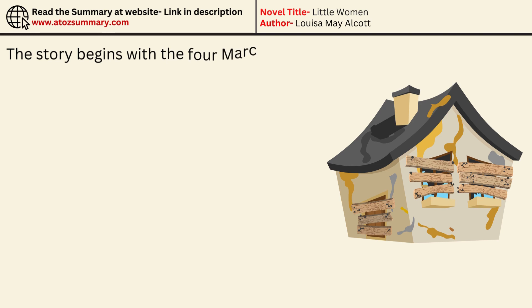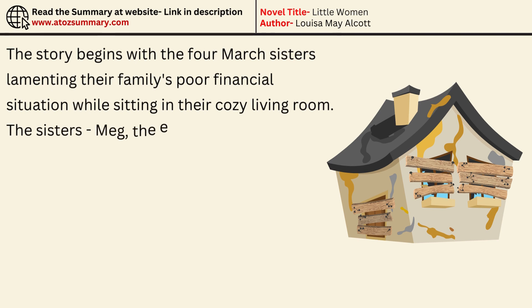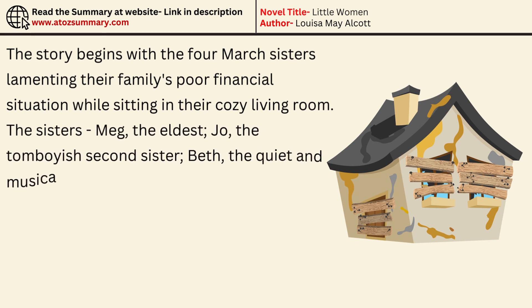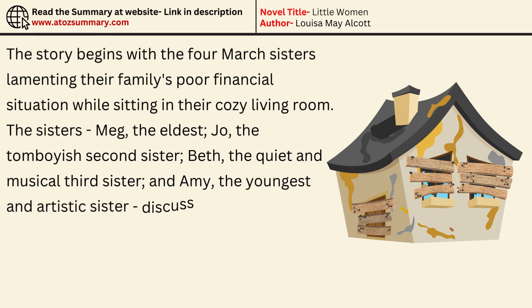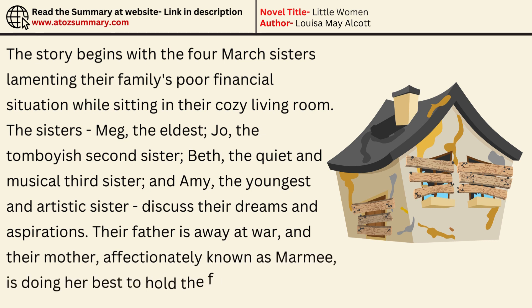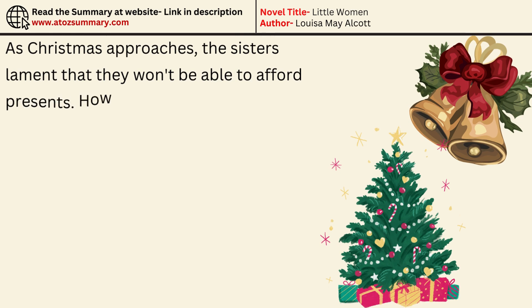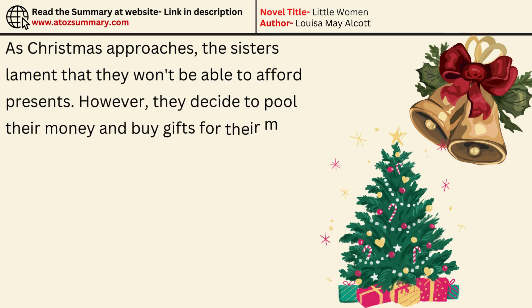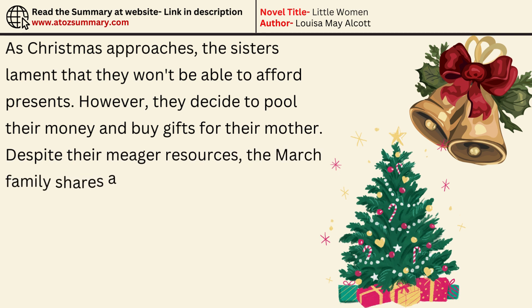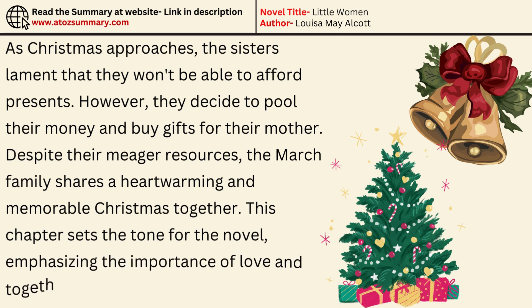The story begins with the four March sisters lamenting their family's poor financial situation while sitting in their cozy living room. The sisters — Meg, the eldest; Jo, the tomboyish second sister; Beth, the quiet and musical third sister; and Amy, the youngest and artistic sister — discuss their dreams and aspirations. Their father is away at war, and their mother, affectionately known as Marmee, is doing her best to hold the family together. As Christmas approaches, the sisters lament that they won't be able to afford presents. However, they decide to pool their money and buy gifts for their mother. Despite their meager resources, the March family shares a heartwarming and memorable Christmas together. This chapter sets the tone for the novel, emphasizing the importance of love and togetherness over material possessions.